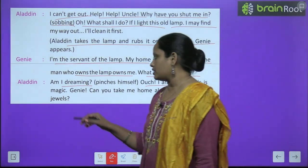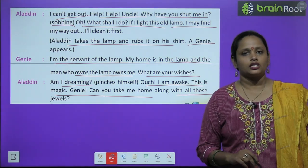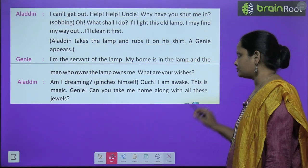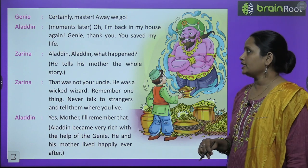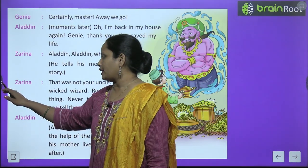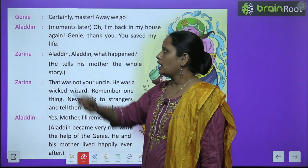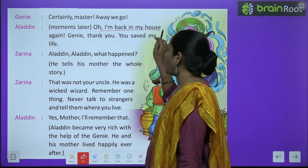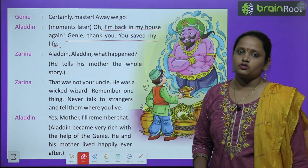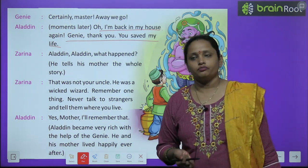Aladdin asked the genie: "Can you take me home along with these jewels?" The genie said: "Certainly master, away we go!" And suddenly, Aladdin was transported home. A moment later Aladdin said: "Oh, I am back in my house again! Genie, thank you — you saved my life." Zarina came running: "Aladdin! Aladdin! What happened?" He told his mother the whole story.